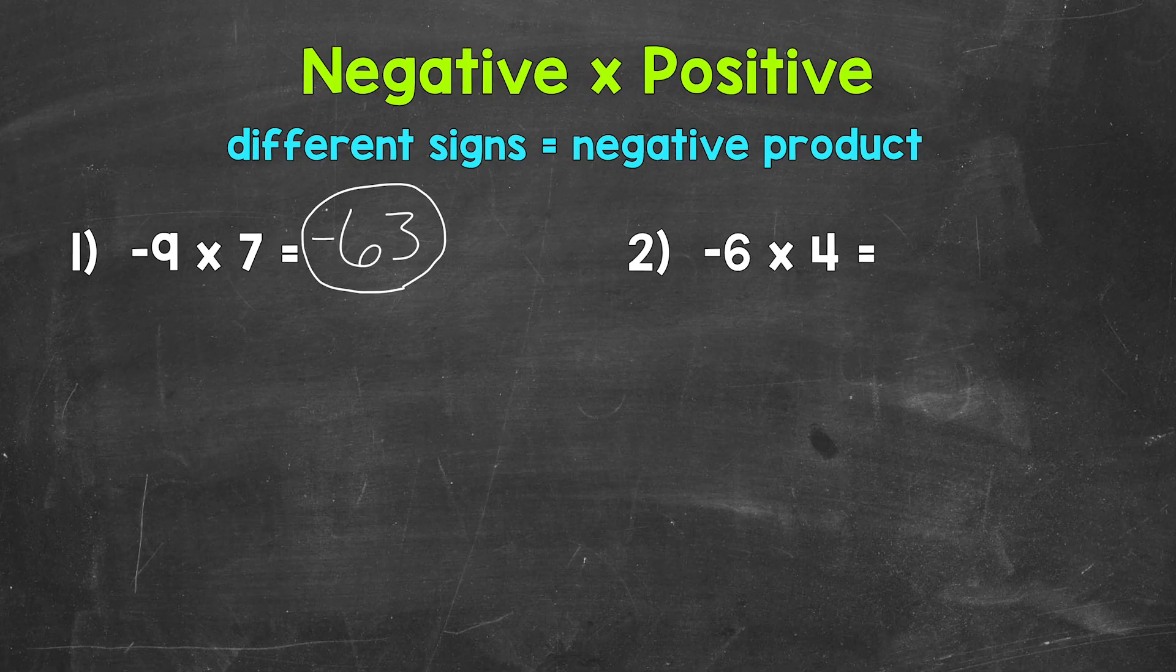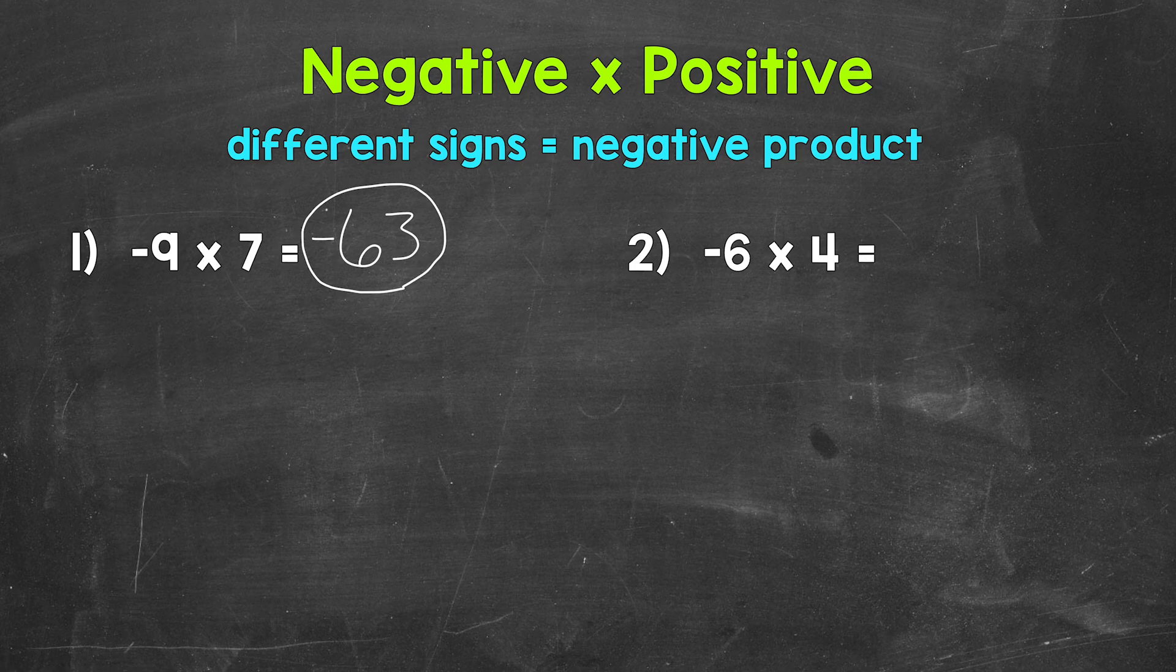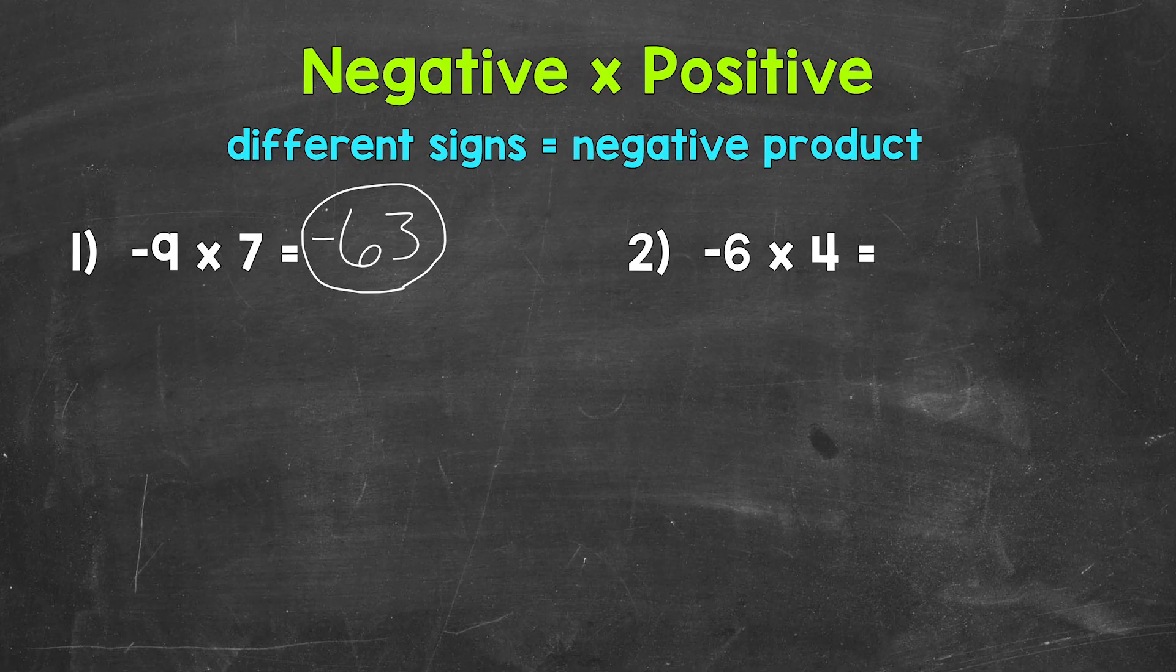Now another way we can think through this, we can use the commutative property. And that just means we can switch the order of what we are multiplying and still get the same answer. For example, 2 times 4 equals 8, and 4 times 2 equals 8.